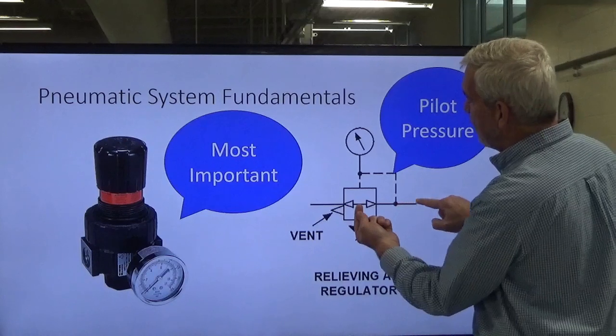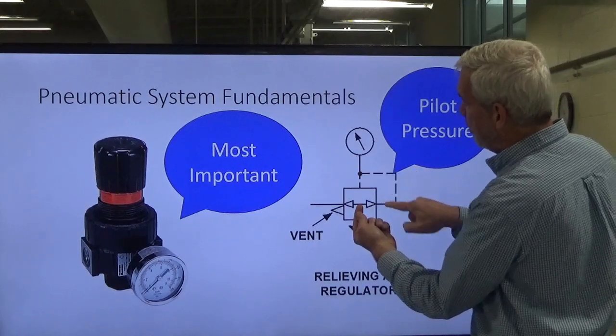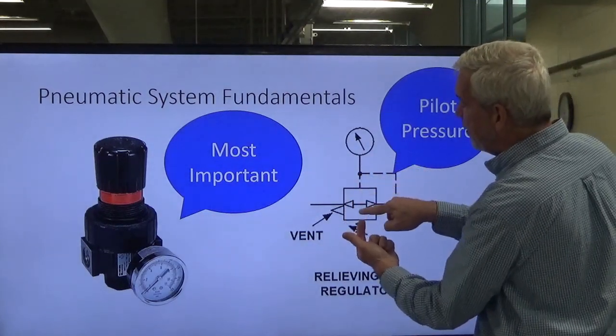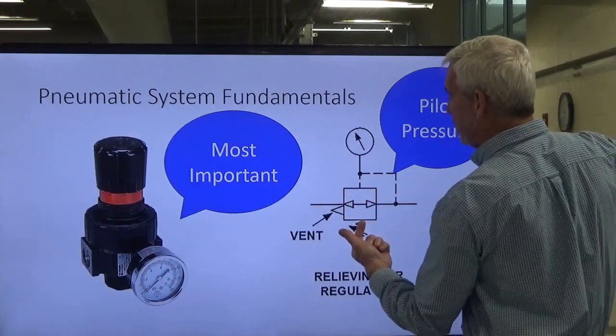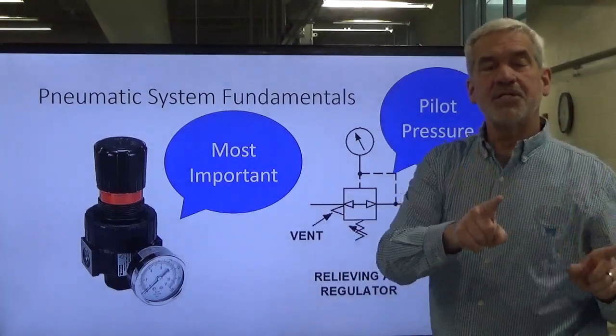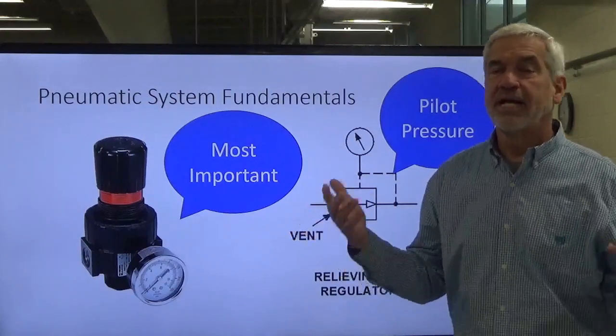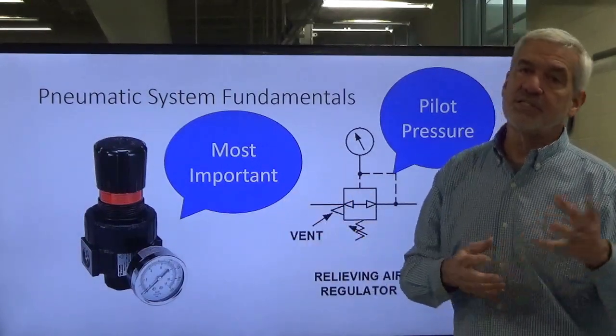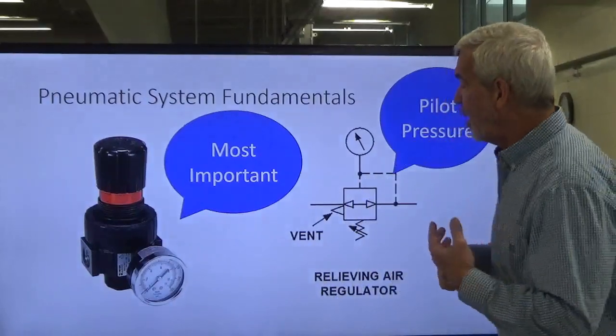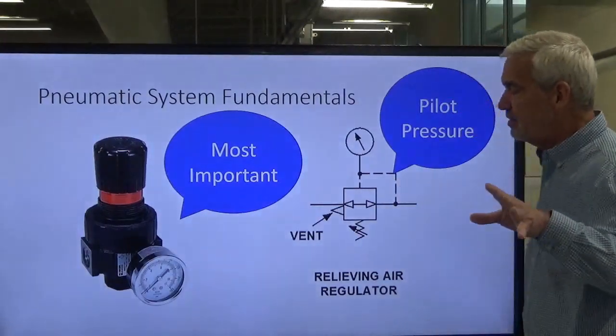If the system were to experience greater than 50 pounds, this pilot pressure is going to force the spool inside the regulator down and shut the air supply off, allowing it to dump to vent. That keeps our system intact and prevents too much pressure on the downstream side. That's another advantage of pneumatics over hydraulics - anything we exhaust goes out into the atmosphere.